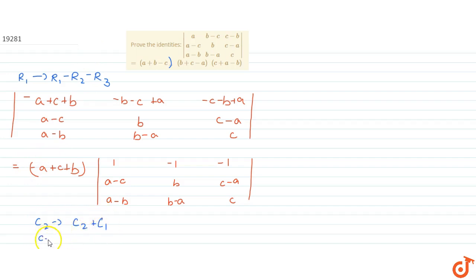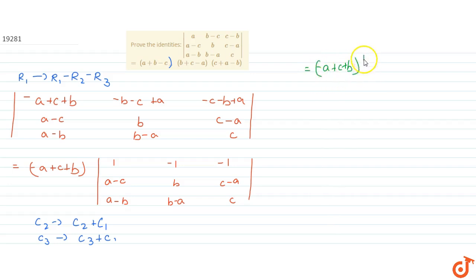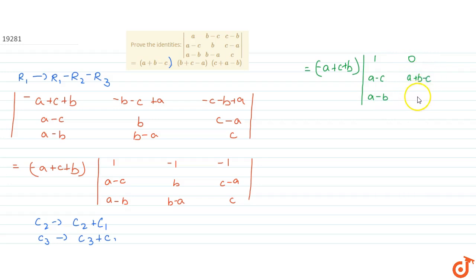Now applying column operations C2 → C2 + C1 and C3 → C3 + C1. The transformed matrix becomes -(a+b+c) multiplied by: row 1: 1, (a-c), (a-b); row 2: 0, (a+b-c), 0; row 3: 0, 0, (a-b+c).